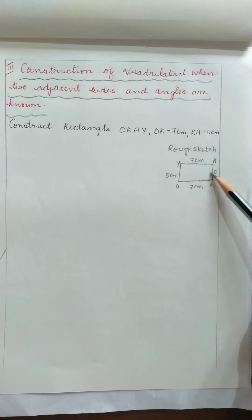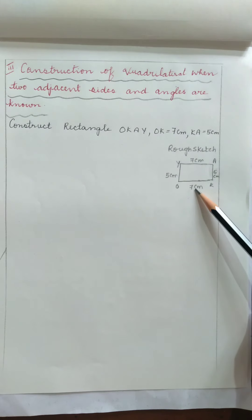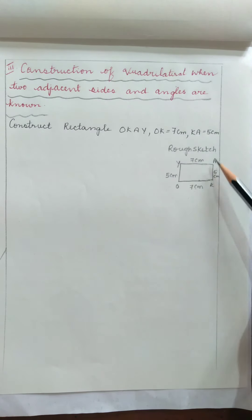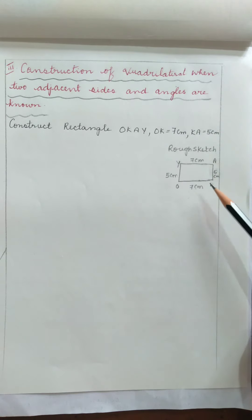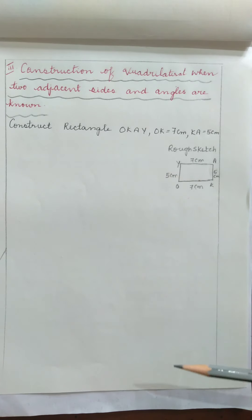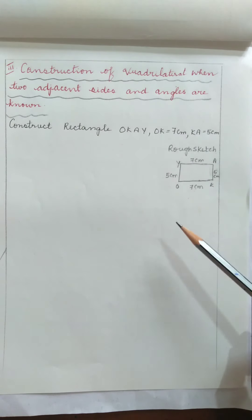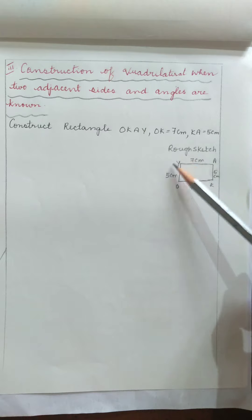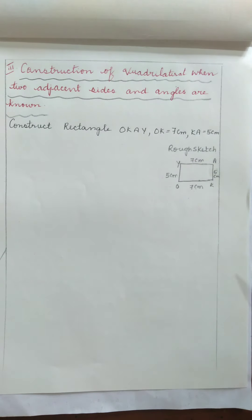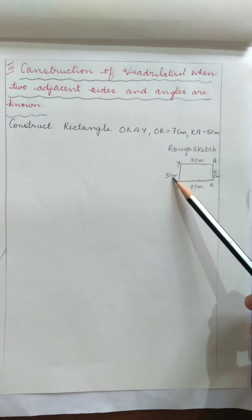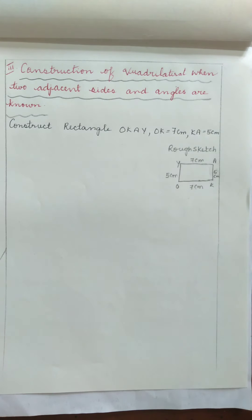Two adjacent sides are given: OK is 7 cm and KA is 5 cm. Those two are adjacent sides because OK and KA have a common point, that is K. We know that the property of a rectangle says opposite sides are equal. When OK equals 7 cm, the opposite side AY will also be 7 cm, and KA equals 5 cm, so the opposite side OY will also be 5 cm.